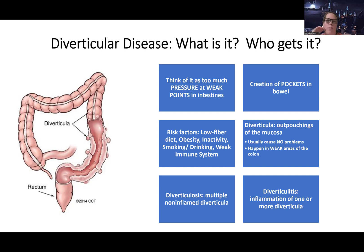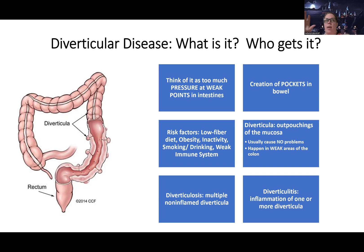People at risk for this are anyone who has constipation risk factors — things like a low fiber diet, sedentary lifestyle, smoking, drinking, obesity, and a weak immune system. A diverticula is just one of those pockets, and on its own usually causes no problems. It forms in weak areas of the colon. This is primarily going to be in the left lower quadrant — it's a colon issue, not anywhere else in the intestines.